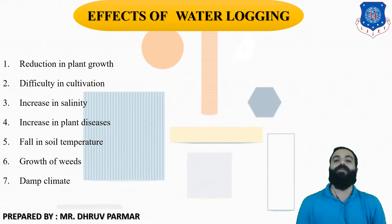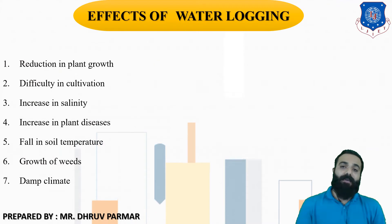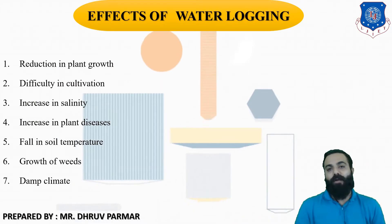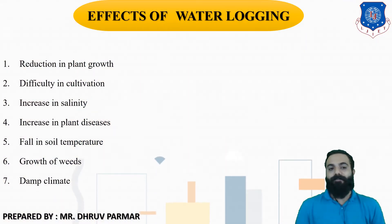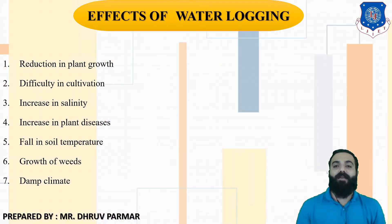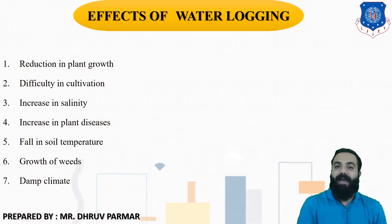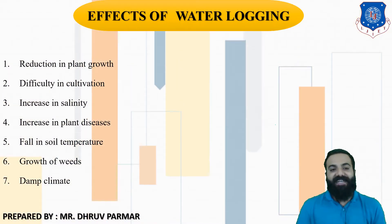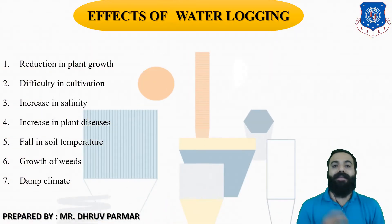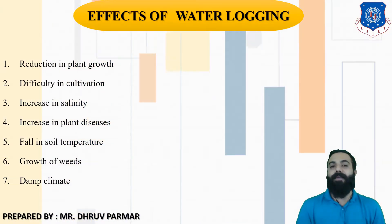The fifth effect is fall in soil temperature. Areas that are already damp become damper due to waterlogging because a large amount of water is stored above the surface. The sixth effect is growth of weeds — unnecessary plants growing near that land. The seventh effect is a damp climate: if an area normally has a temperature of 30 degrees, waterlogging will make the temperature colder, around 25 degrees.